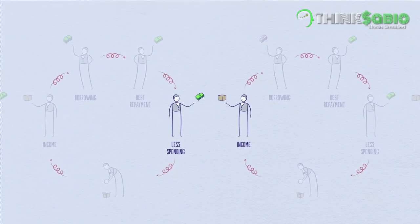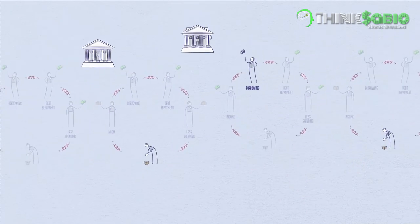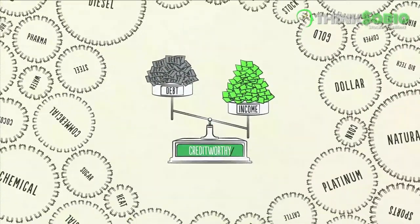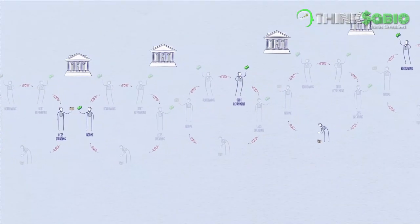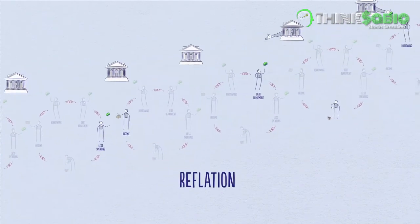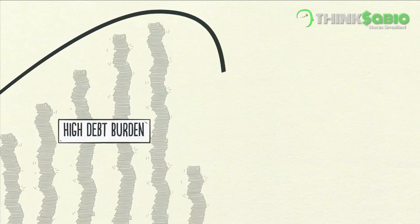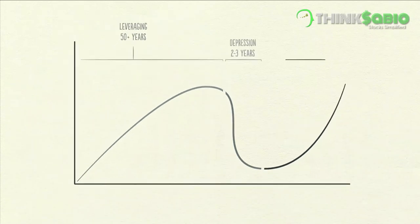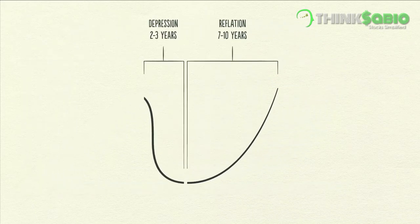When incomes begin to rise, borrowers begin to appear more creditworthy. And when borrowers appear more creditworthy, lenders begin to lend money again. Debt burdens finally begin to fall. Able to borrow money, people can spend more. Eventually, the economy begins to grow again, leading to the reflation phase of the long-term debt cycle. Though the deleveraging process can be horrible if handled badly, if handled well, it will eventually fix the problem. It takes roughly a decade or more for debt burdens to fall and economic activity to get back to normal — hence the term 'lost decade.'